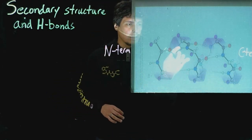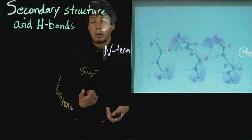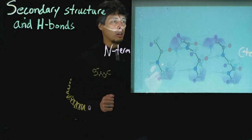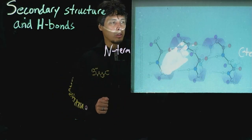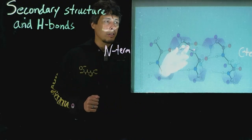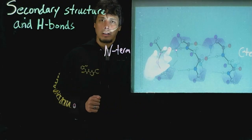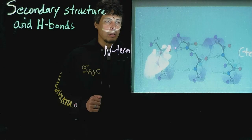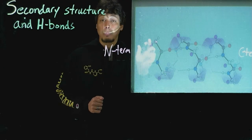If you look in here, these dashed lines indicate hydrogen bonding. There's a hydrogen bond between where the donor is the NH of a peptide bond and the H-bond acceptor is the carboxyl group of a different peptide bond.